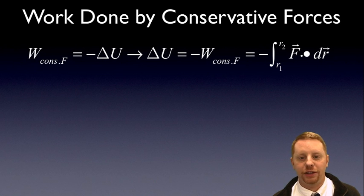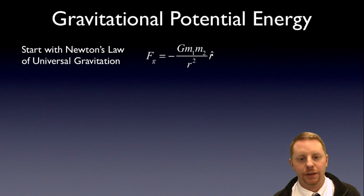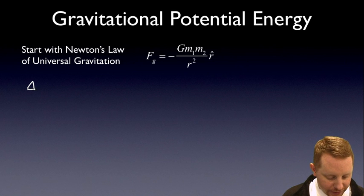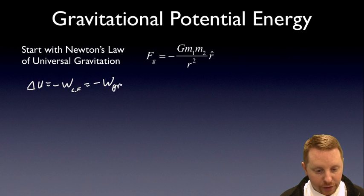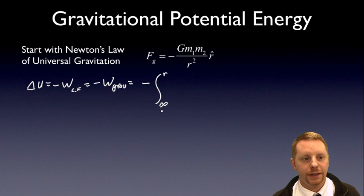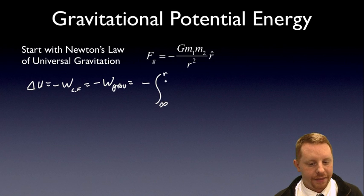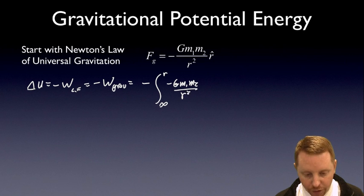Let's apply this to gravitational potential energy in a non-uniform gravitational field. We start with Newton's law of universal gravitation: the force of gravity equals minus GM1M2 over r squared in the direction of the vector between the two objects. The negative sign means it's an attractive force along that vector. The change in potential energy equals the opposite of the work done by gravity — the opposite of the integral from infinity to some position r of GM1M2 over r squared dr. We define the potential energy due to gravity as zero when infinitely far away from all other objects.